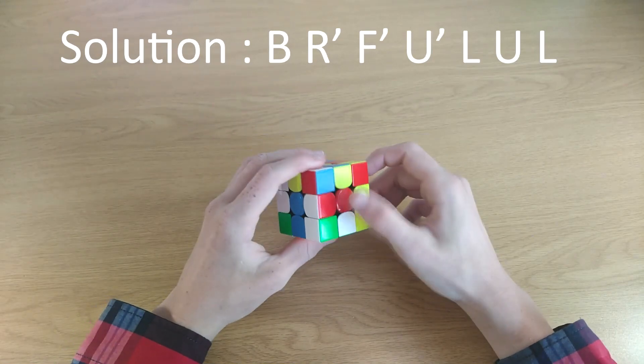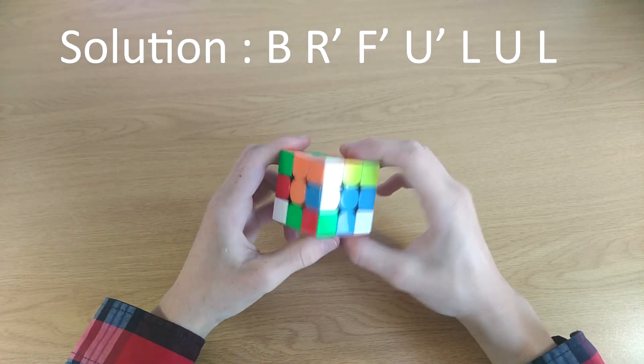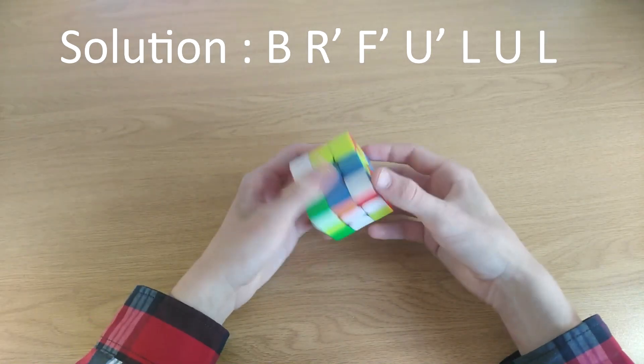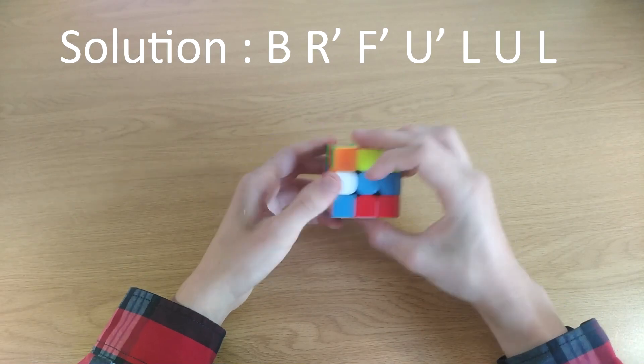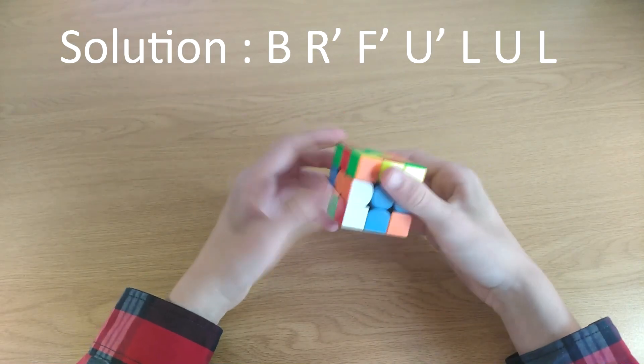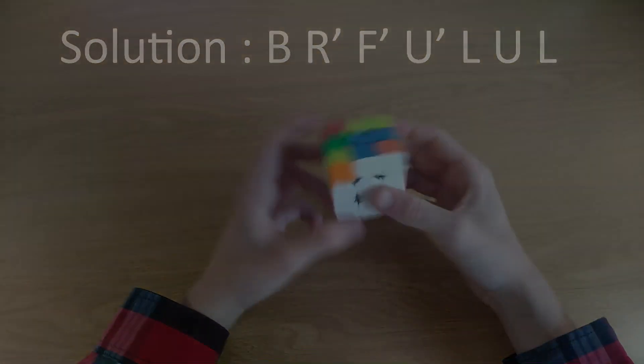We can insert this piece with an R' and then an F' here. Then we can do a U', insert this piece, put it back and insert the orange piece. And as you can see, that was only seven moves again.